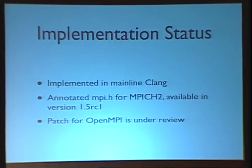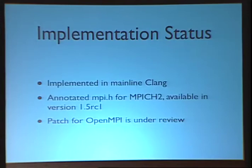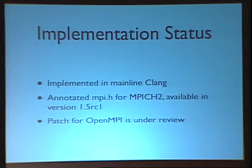We have implemented this in mainline Clang. We have also sent a patch to the MPICH2 implementation, and the MPI.h header is already annotated — you can check out the latest release candidate version and it will work with the latest Clang. The patch for OpenMPI is under review, because OpenMPI developers have voiced some interest in shaping this warning for their code base, which abuses some pointer types and would fire lots of diagnostics. That's not really correct, but they already have this code and they have to deal with it.